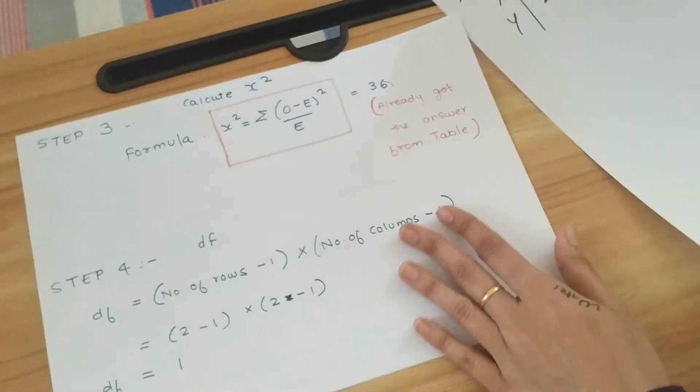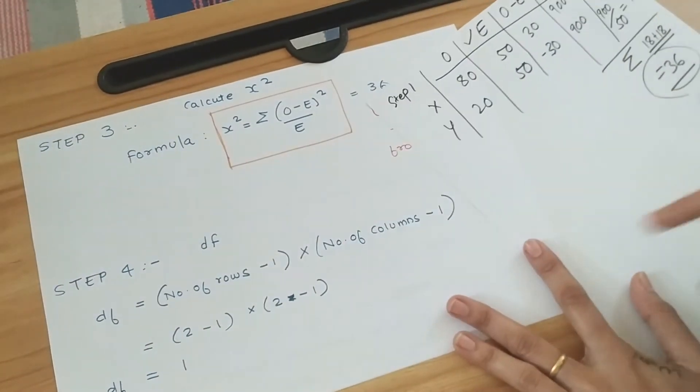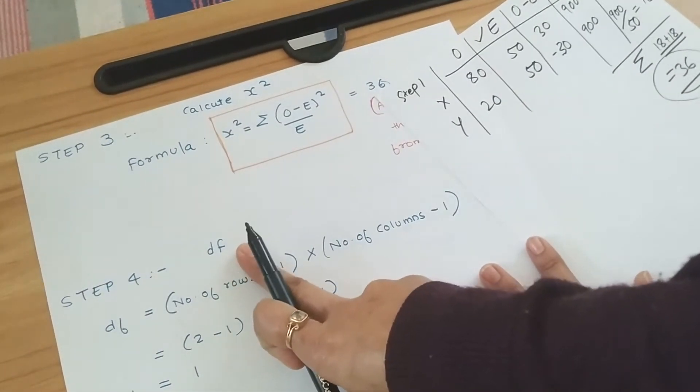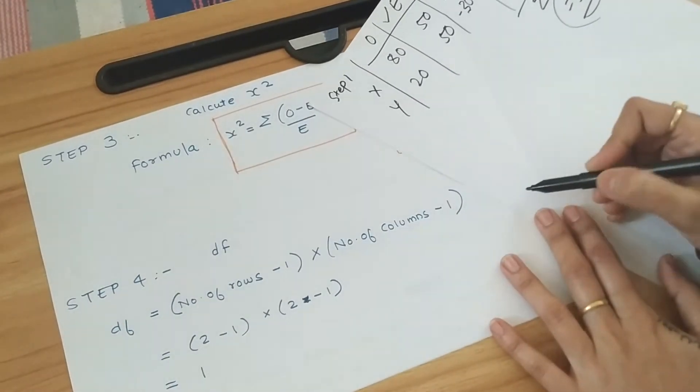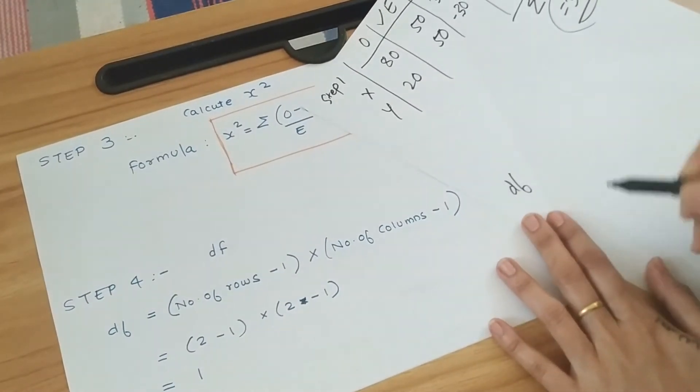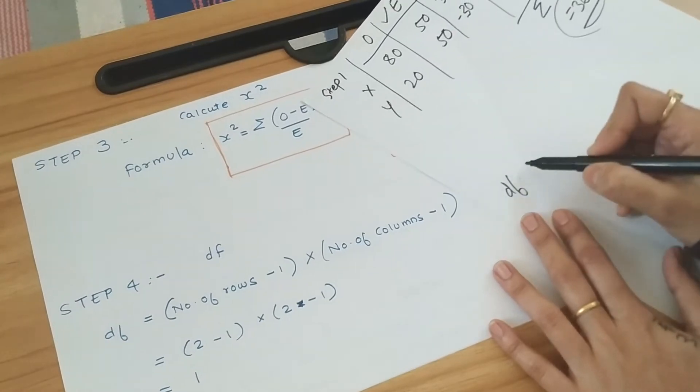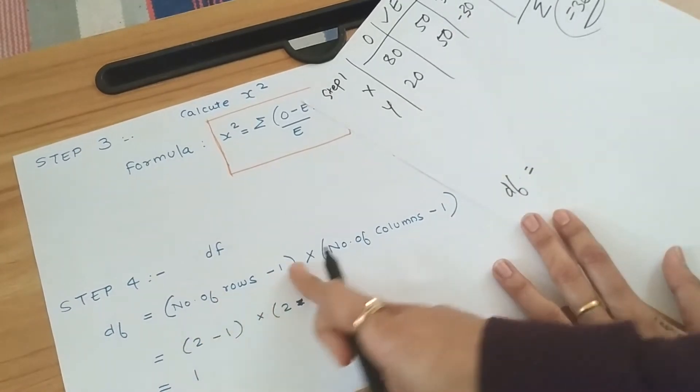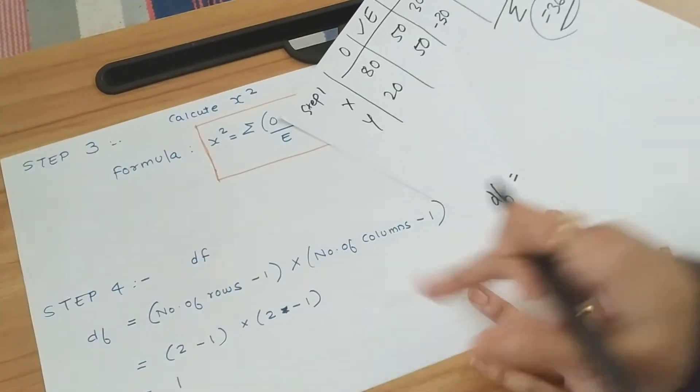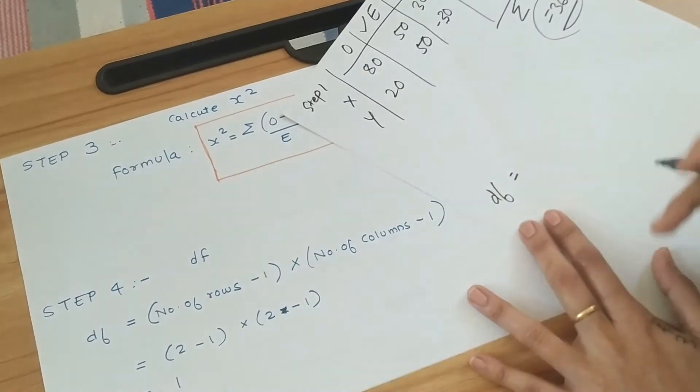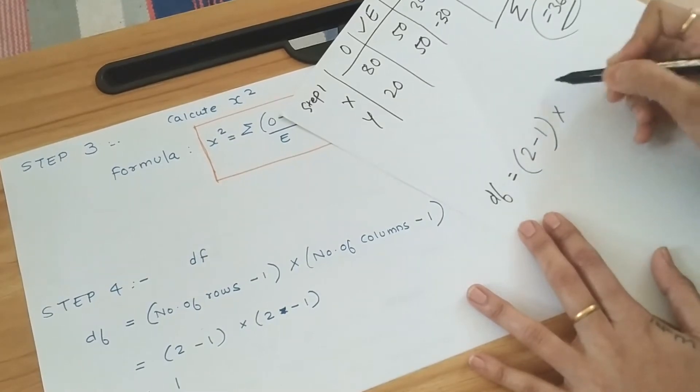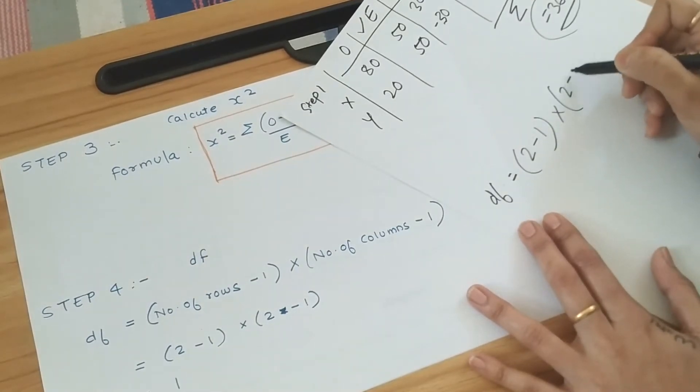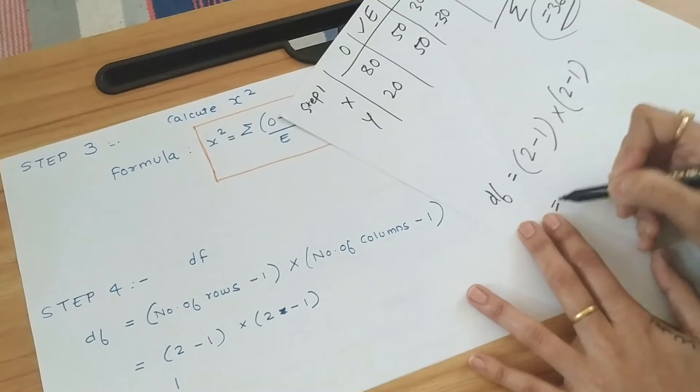Now we go directly to step 4. After this step, that is finding your df value. What is the df value? It's number of rows minus 1 and number of columns minus 1, then multiplication. So number of rows are 2 minus 1 into number of columns 2 minus 1 again. So that is 1 into 1, which is 1. So your df value is 1.